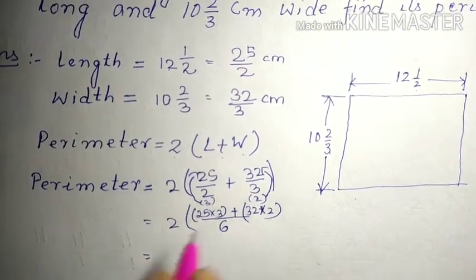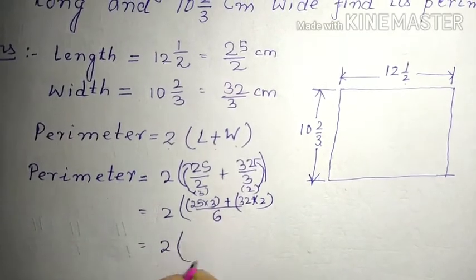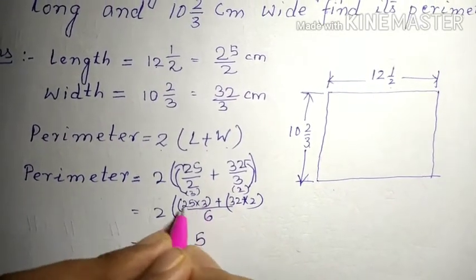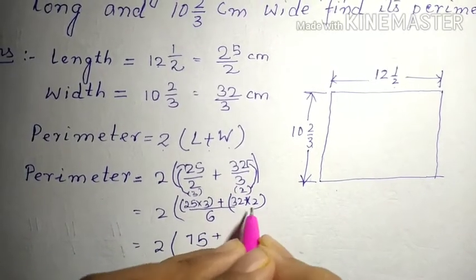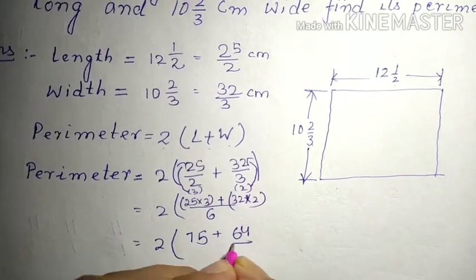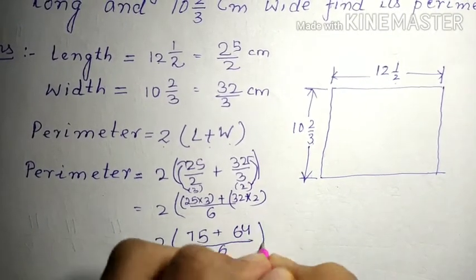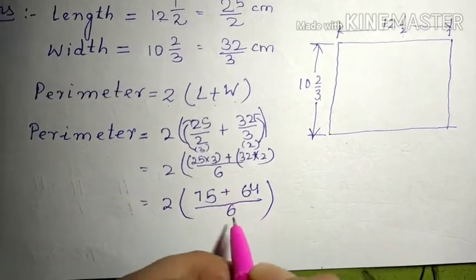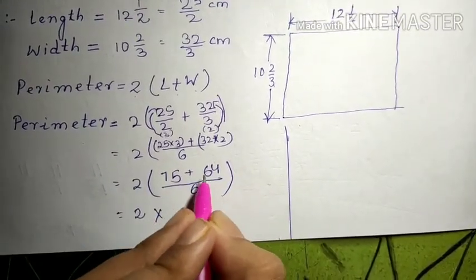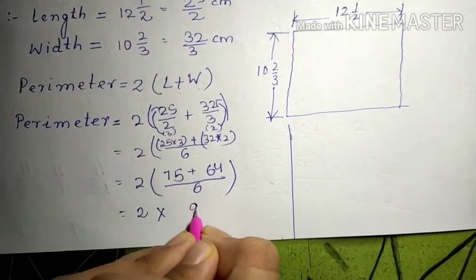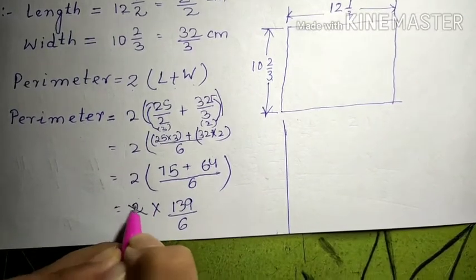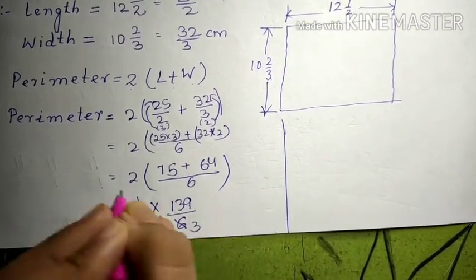So 25 into 3 plus 32 into 2. Now let's multiply it. So 25 into 3, 3 times 3 is 15 carry 1, 3 times 2 is 6 plus 1 is 7, so 75. Plus, then 2 times 2 is 4, 3 times 2 is 6, so 64, by 6. So our answer is 75 plus 64 by 6. So 2 into (75 plus 64), 5 plus 4 is 9 and 7 plus 6 is 13, so 139 by 6. So the 2 in numerator and 6 in denominator we can cancel.